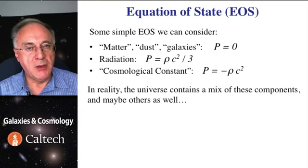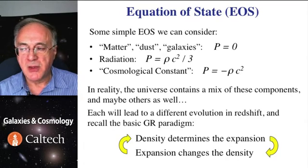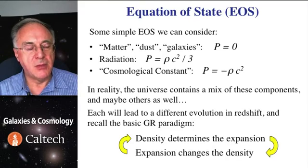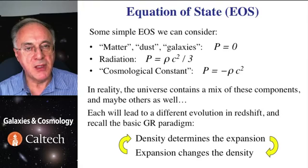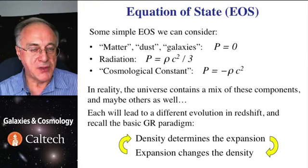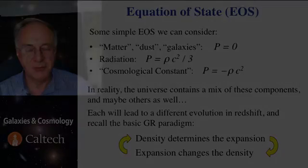In reality, the universe has all three of those plus maybe other things, and there is a mixture, so all three have to be included in Friedmann's equation. Each of those will evolve in a different fashion because each one of them implies a different behavior of density as the universe expands. And so as the universe expands, its density changes, that affects the expansion, and so on.